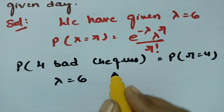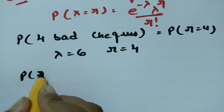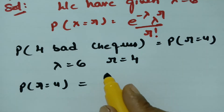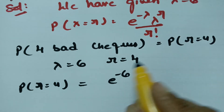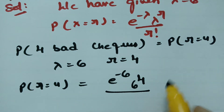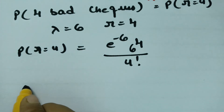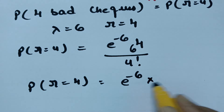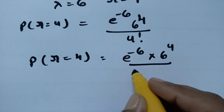So lambda is equal to six and r is equal to four. Substituting into the Poisson formula: P(r = 4) = e^(−6) · 6^4 / 4!. Four factorial is one times two times three times four, which equals 24.